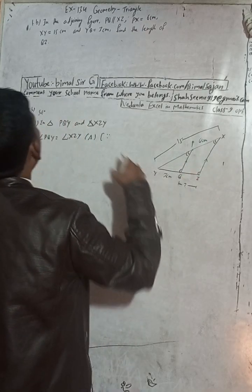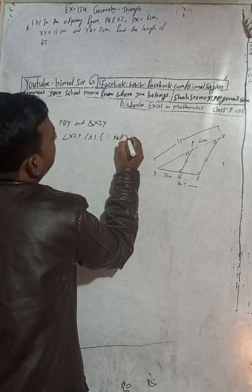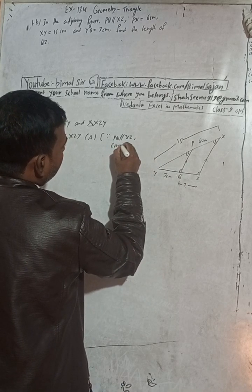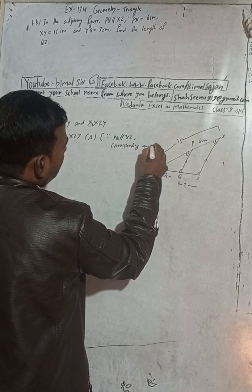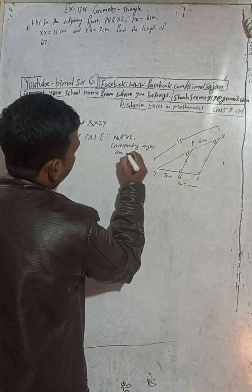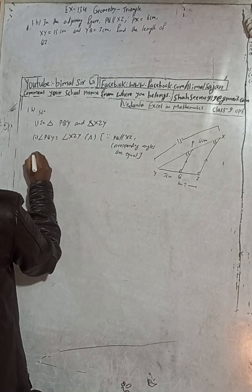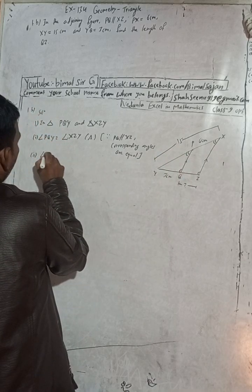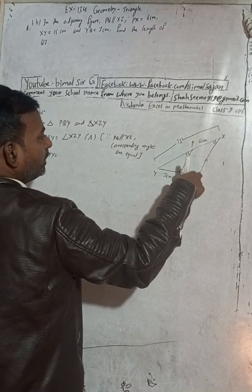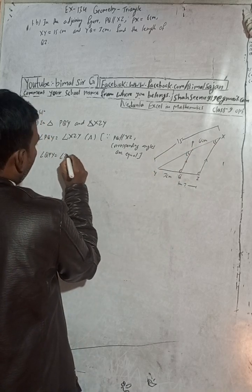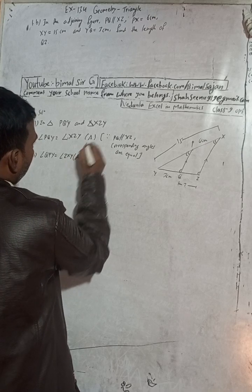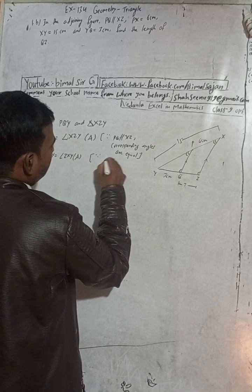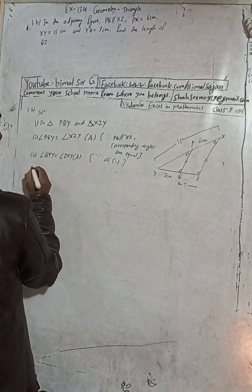PQ parallel XZ, so corresponding angles are equal. Now for the second pair: angle QPY is equal to angle ZXY, and the reason for this is the same — corresponding angles, as in reason number one.